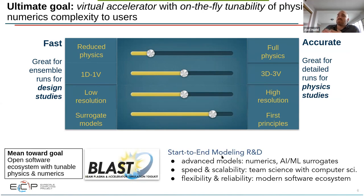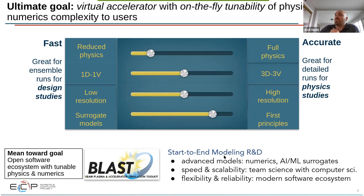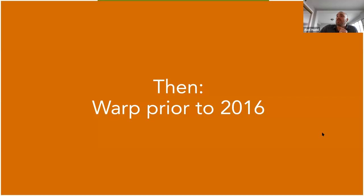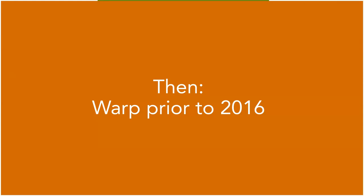At Berkeley Lab, the toolkit we developed toward this goal is an open source software system called the Beam Plasma and Accelerator Simulation Toolkit — BLAST — which develops codes that each address parts of this space and are compatible and work together.